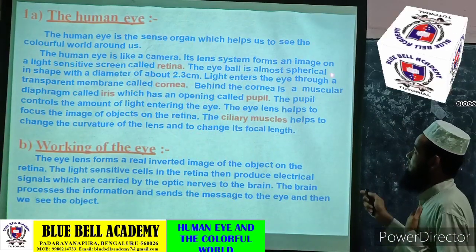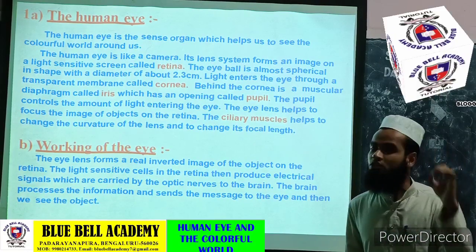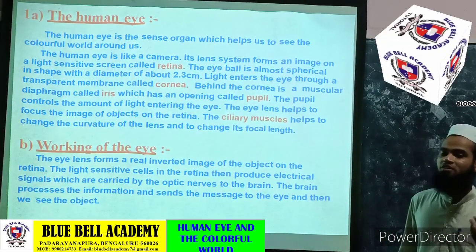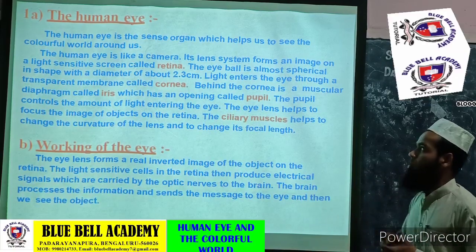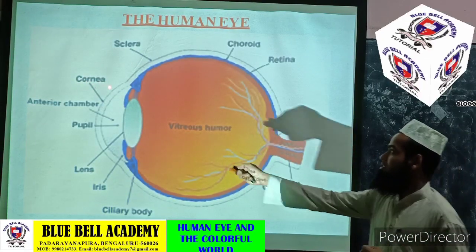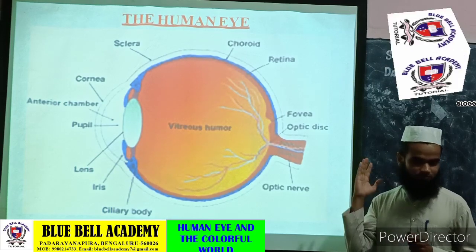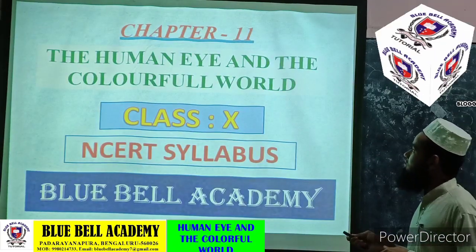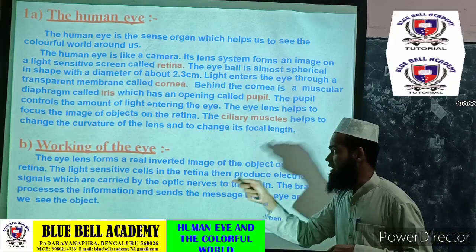The eyeball is almost spherical in shape with a diameter of 2.3 cm, and its size should be maintained constant. If the size gets increased or decreased, you are going to suffer from certain defects. Light enters the eye through a transparent membrane called the cornea. In the eyeball, we have this transparent membrane called the cornea, and most of the light will get refracted through it. It is a transparent bulge portion in front of your eyeball.